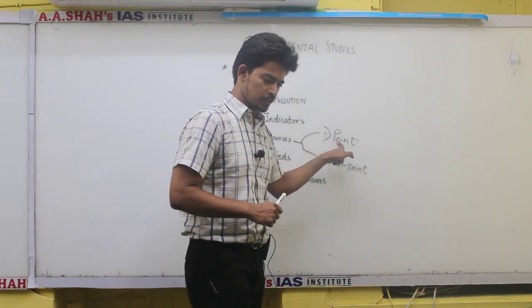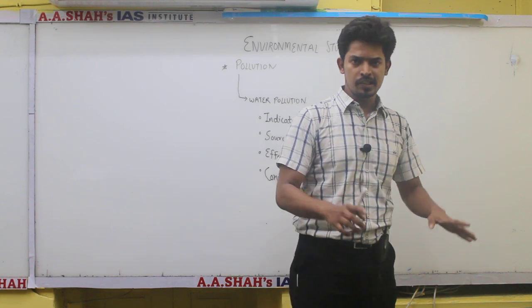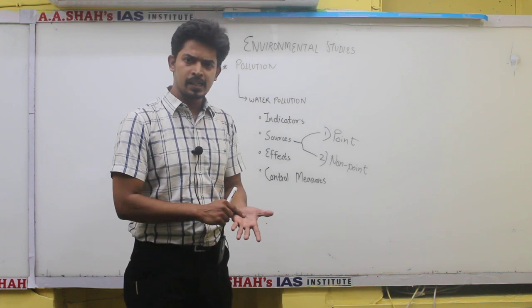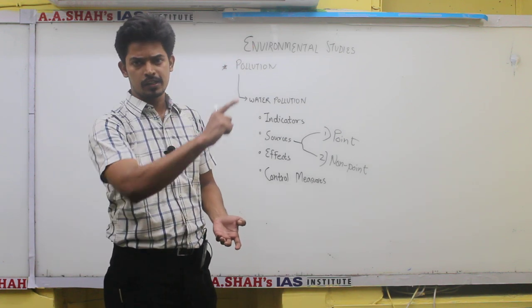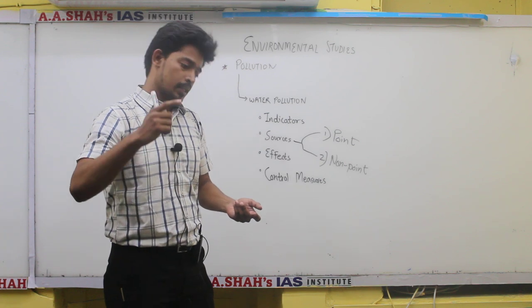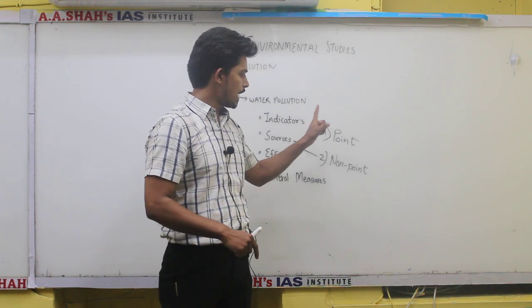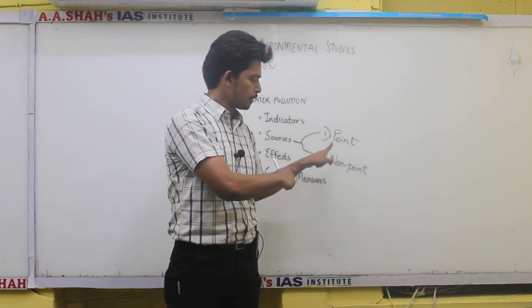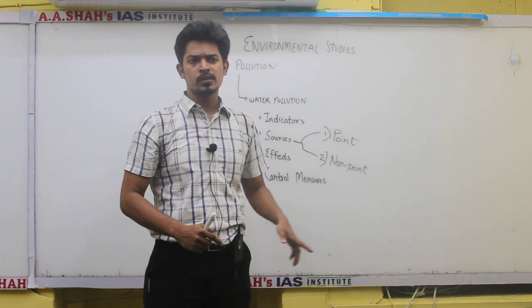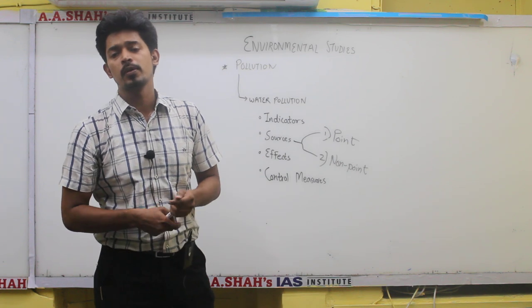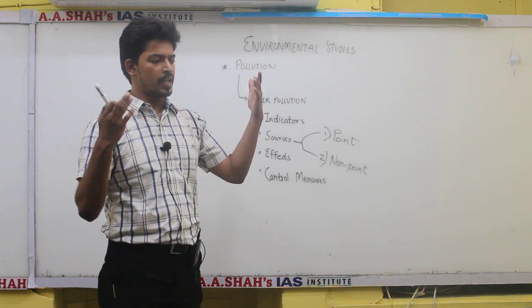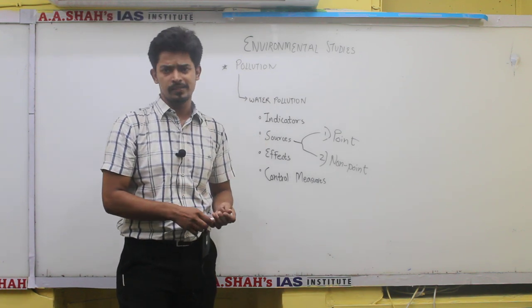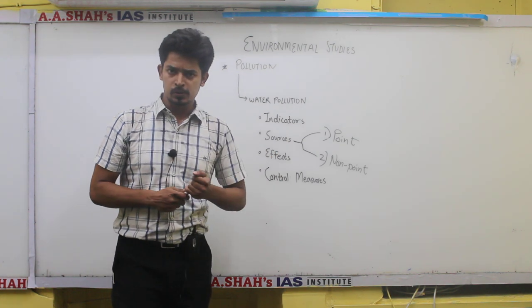For example, in point sources, if we find certain chemicals in a river, that chemical can be traced to a certain industry or factory located alongside the river. This makes us sure that this chemical must have come from that industry - that's point sources of pollution. Non-point sources means we really don't know from where the pollutant is coming. It could have come from an agriculture site, slaughter, household waste or anything.